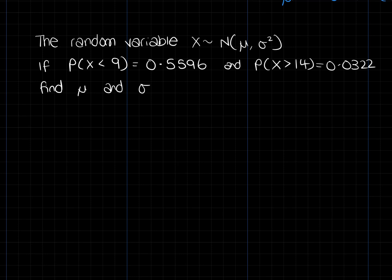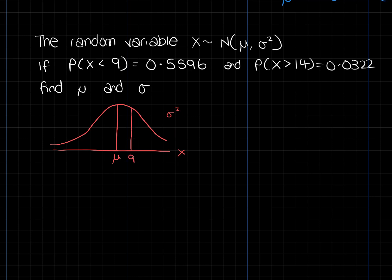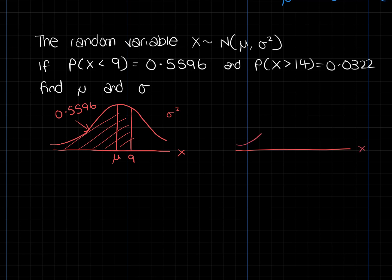So we have a random variable X — we don't know mu or sigma. I'm going to tell you that P(X less than 9) is 0.5596 and P(X greater than 14) is 0.0322. Drawing a sketch: for the first condition, 9 is just above mu and the area to the left of 9 is 0.5596. For the second condition, the area above 14 is 0.0322.